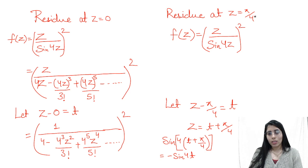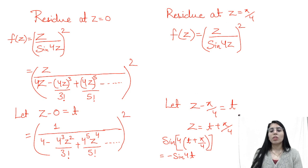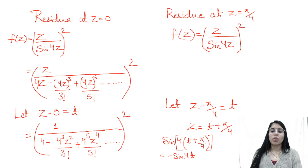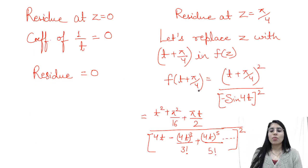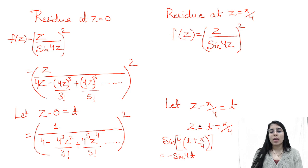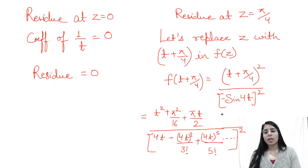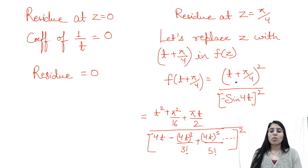Next, for the residue at z = π/4, we take z − π/4 = t, so z = t + π/4. We substitute into sin(4(t + π/4)). Taking the 4 in, that gives sin(4t + π), which equals −sin(4t). So the expression becomes (t + π/4)² over (−sin(4t))², which is (t + π/4)² over sin²(4t). Expanding the numerator gives t² + (π/4)² + 2t(π/4), and the denominator involves the sine series expansion, all squared.